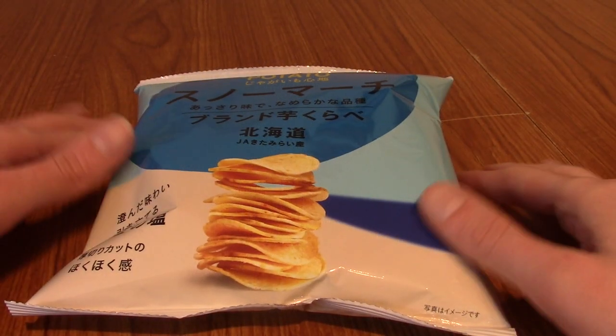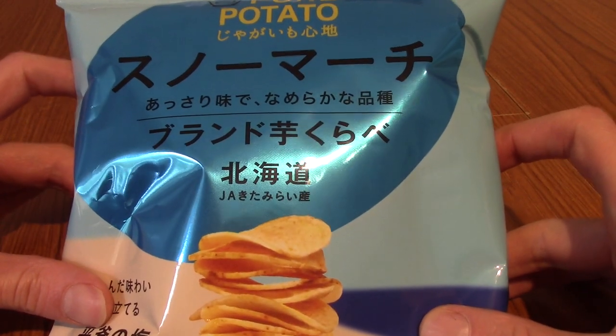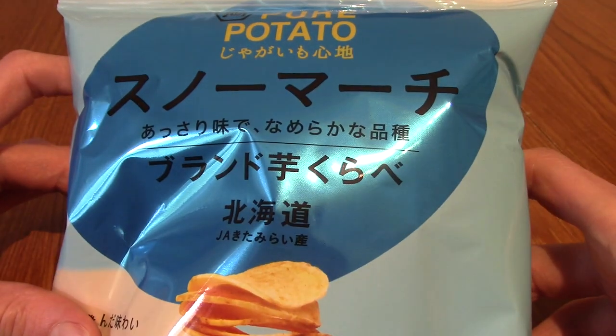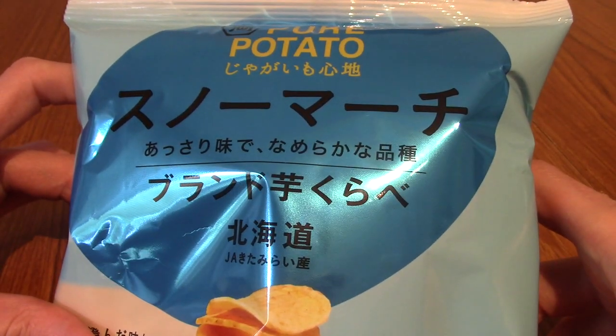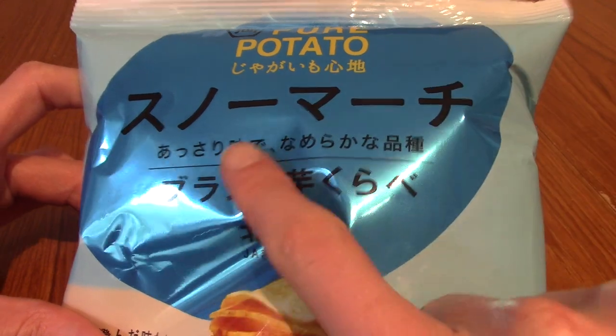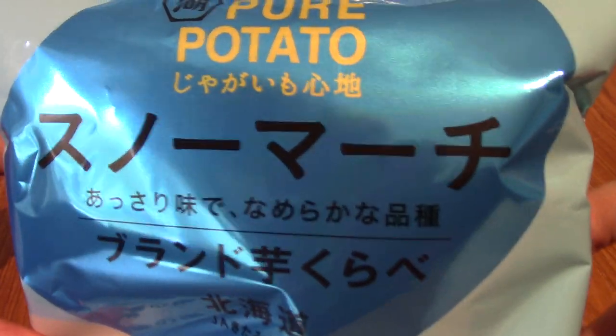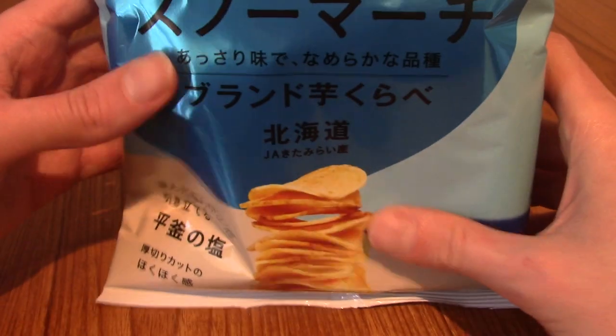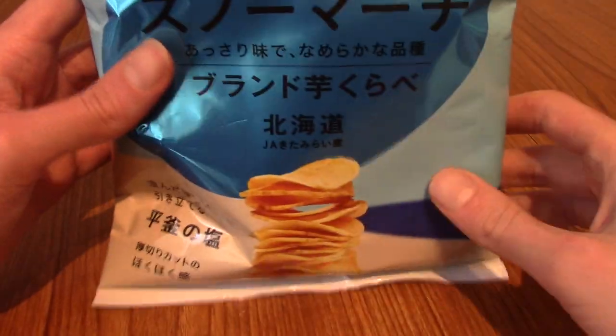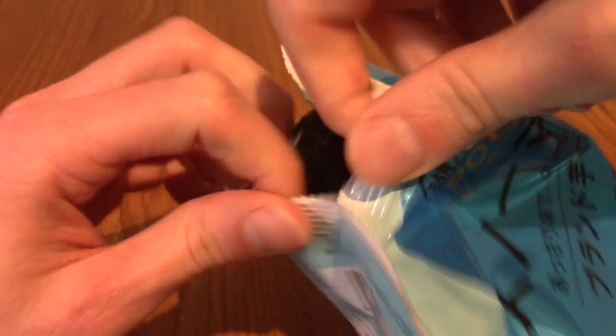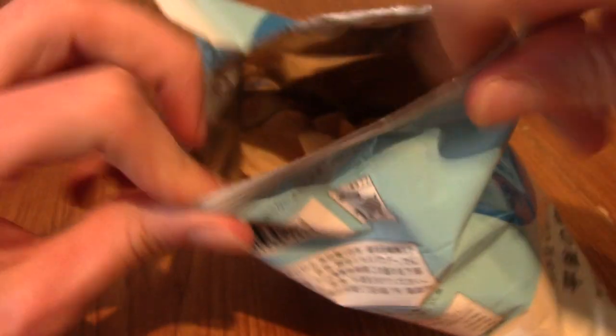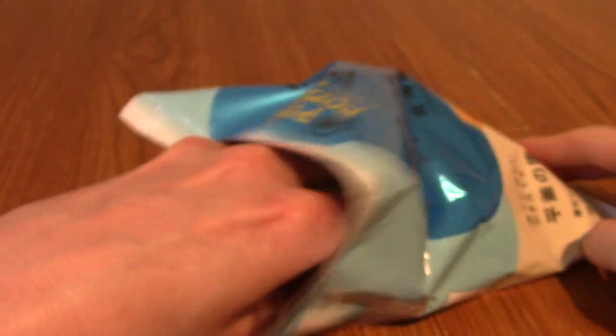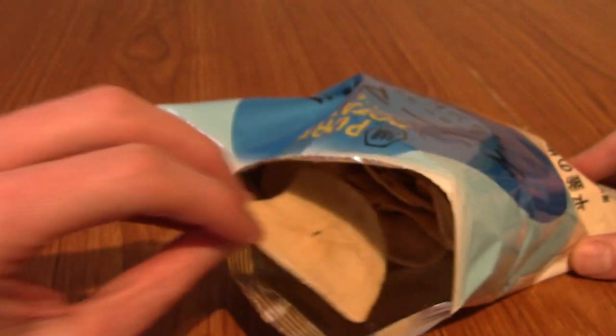All right, it is time for some Snowmarch salted chips. I don't think I've ever had any Snowmarch before. I think that's the, I think that's the brand anyway. Or maybe it's not. Oh, these are Pride Potato. Aha! Pride Potato's the brand. There you go. So these are salted potato chips basically. There you go. Yeah, I'm guessing they are just sort of regular salted flavor.